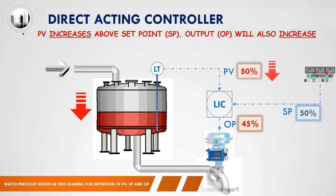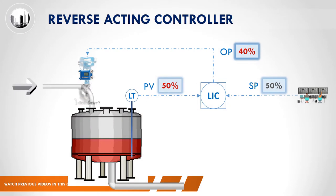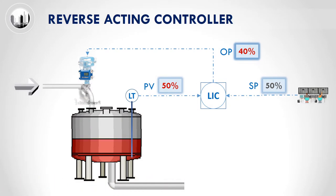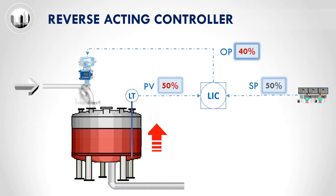Next, we will look at an example of a reverse acting controller. For this example, the setup of the tank is slightly different from the previous example. In this example, the control valve is located at the inlet of the tank. Again, we will evaluate the scenario when the level in the tank increases. The increase of the tank level will be measured by the level transmitter. When the tank level increases, the control valve at the inlet of the tank will close more to reduce the feed into the tank.